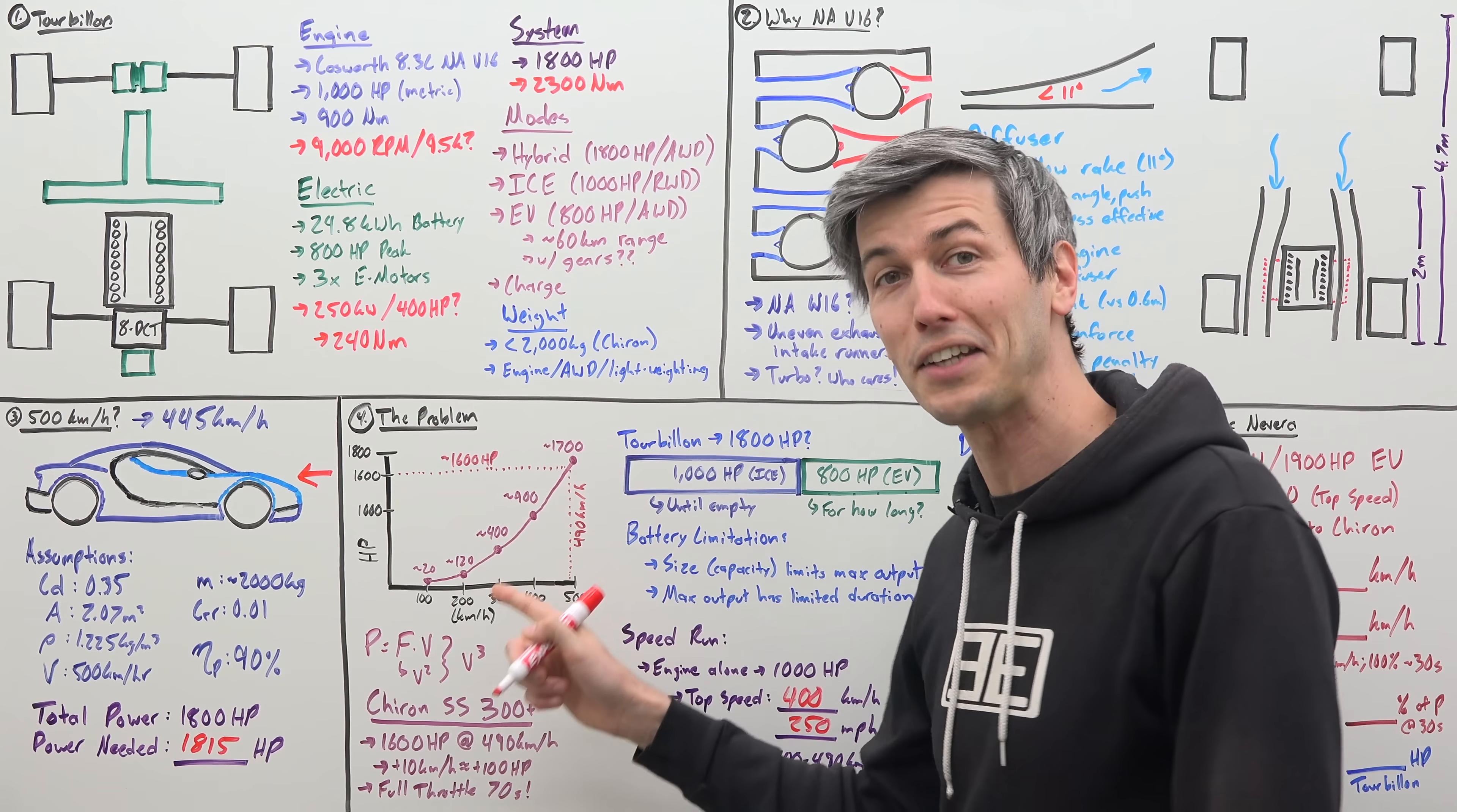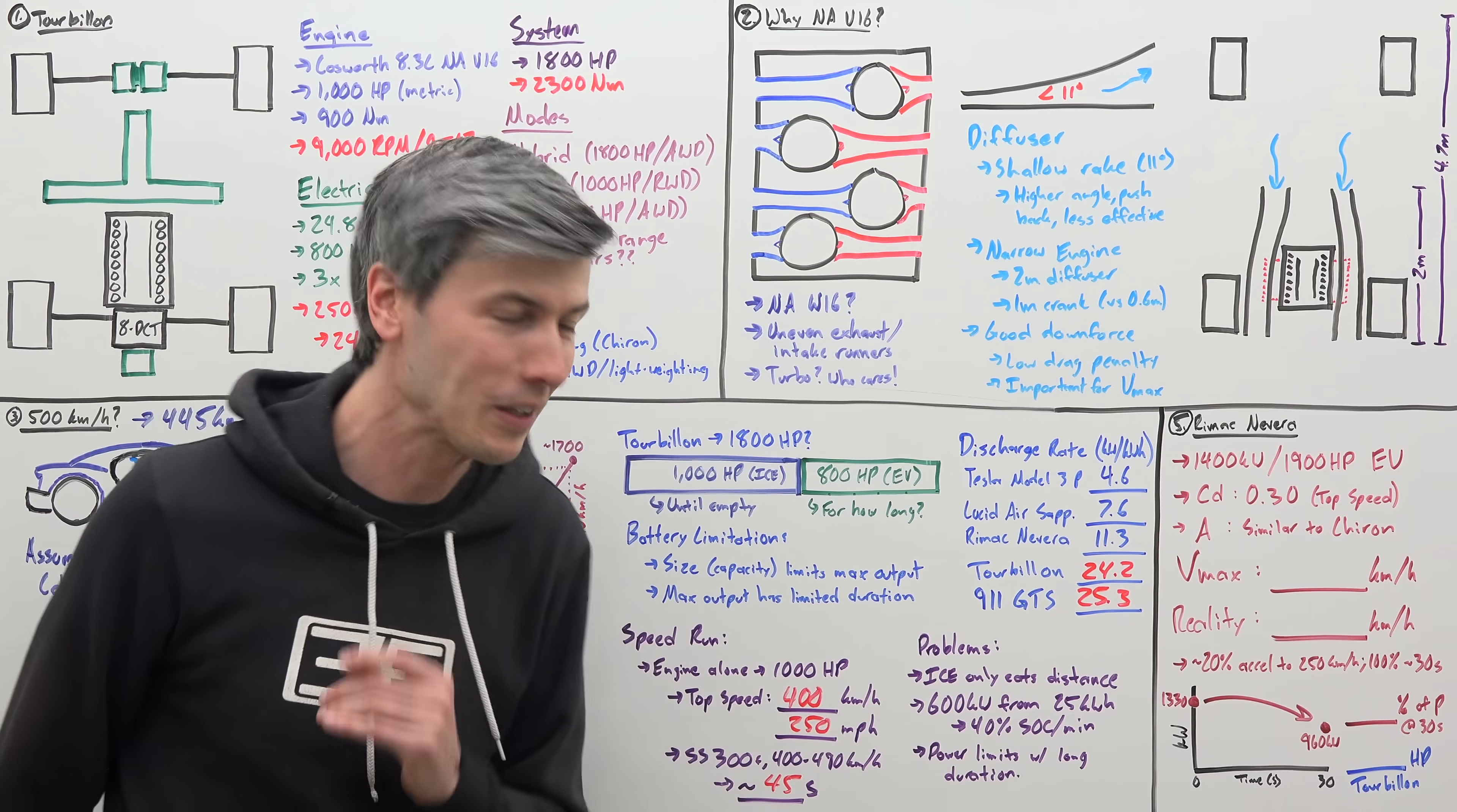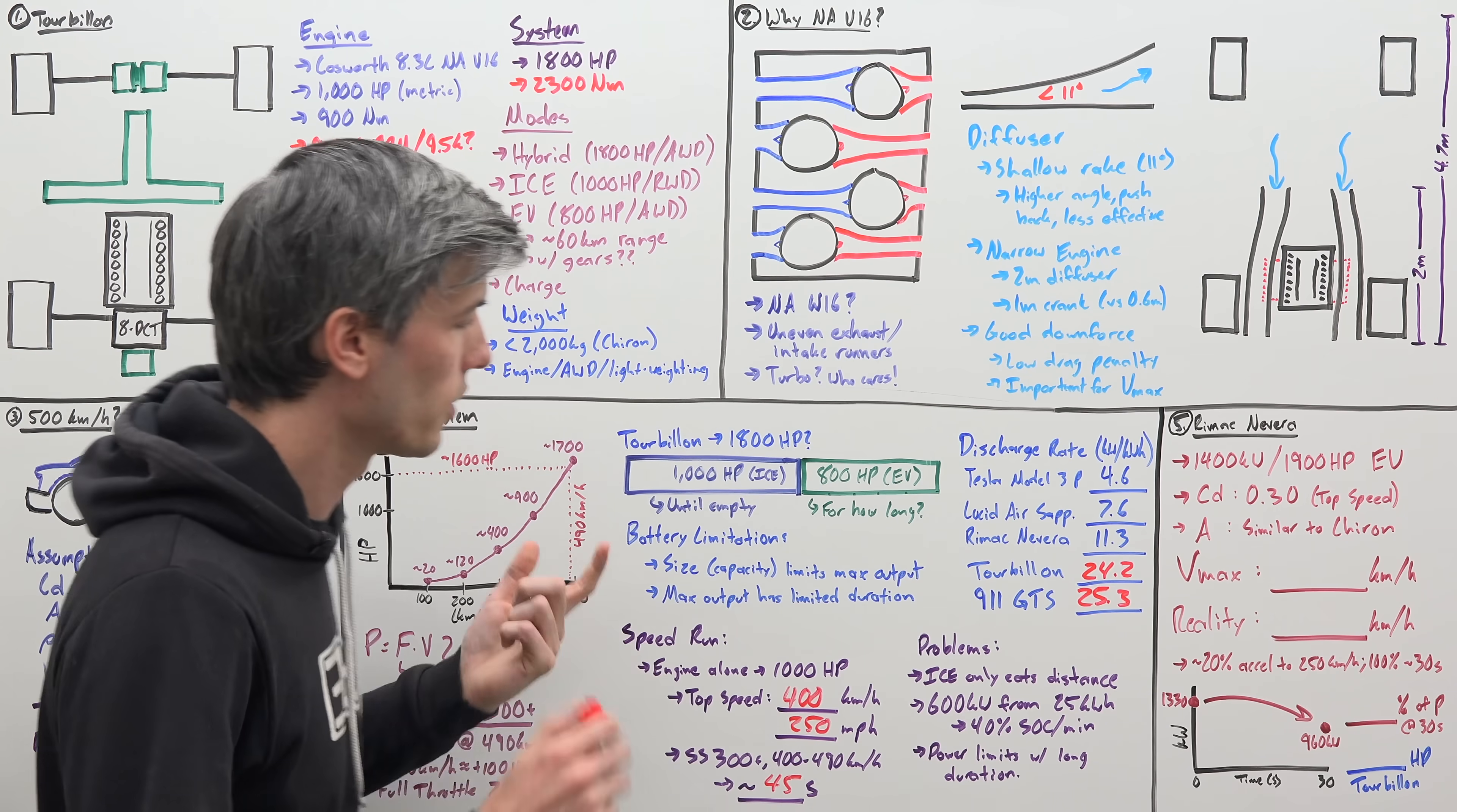We only have 100 kilometers per hour to go to hit that 500 kilometers per hour mark. But again, that's the part that takes the most time because we're using, we're up against all that aerodynamic drag. So if you look at the SS300+, what Bugatti did with the Chiron, it took them 45 seconds to go from 400 kilometers per hour to 490 kilometers per hour. So what's the problem here? Well, there's several problems. First of all, if you're just using the combustion engine to accelerate up to 250 miles per hour, it's going to take longer, meaning you're eating up more distance. So you need an even longer stretch of road to make this happen.